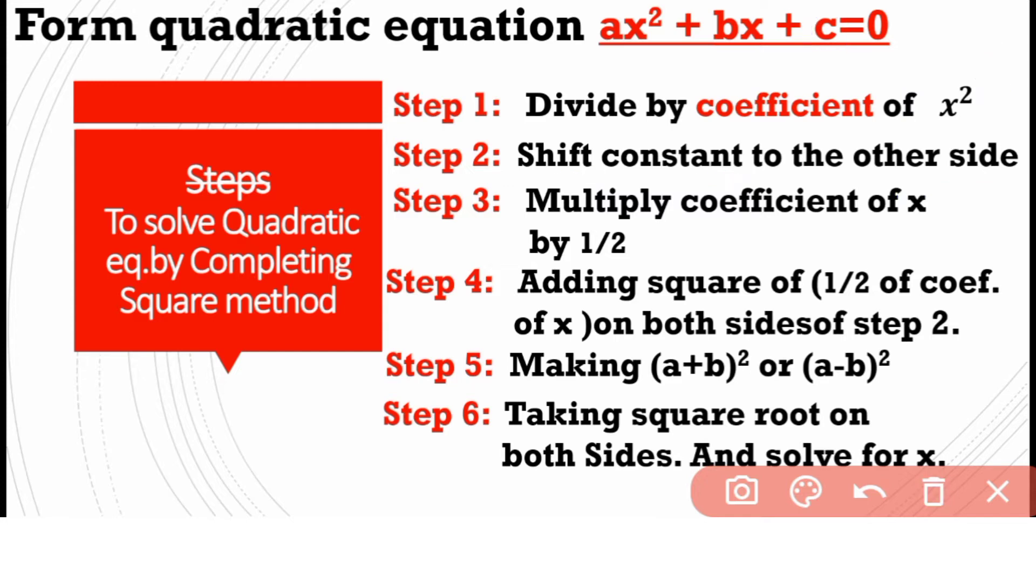Step 3 is to multiply the coefficient of x by 1/2. Here the coefficient of x is b. It means 1/2 multiply by b, which is b/2.